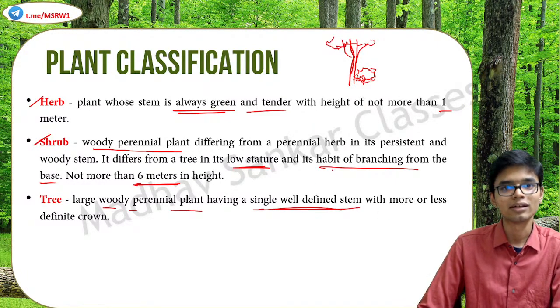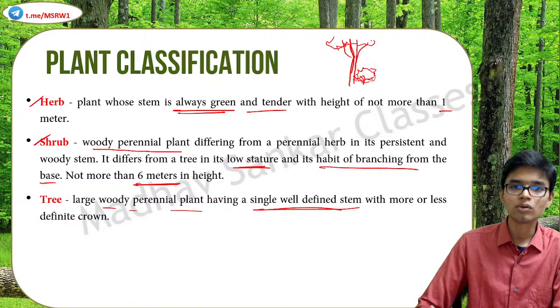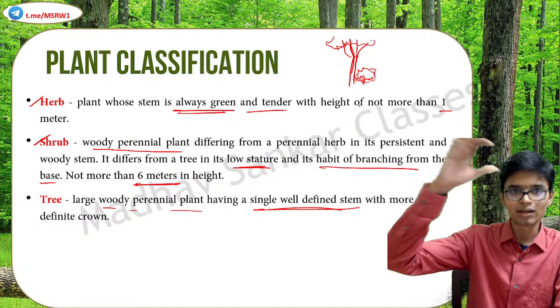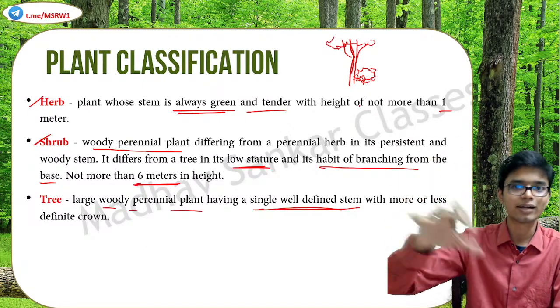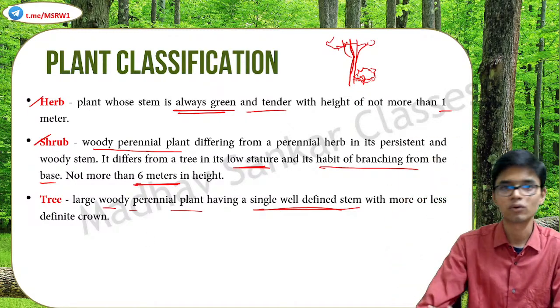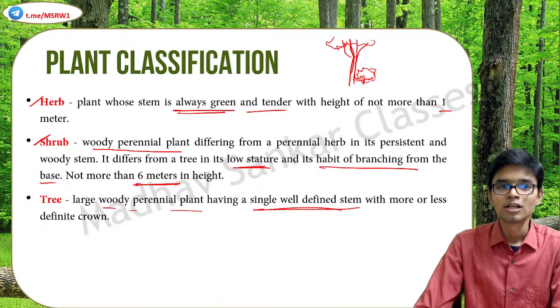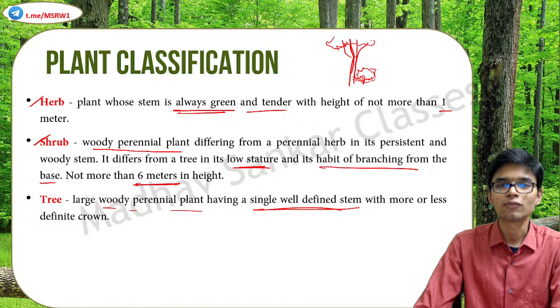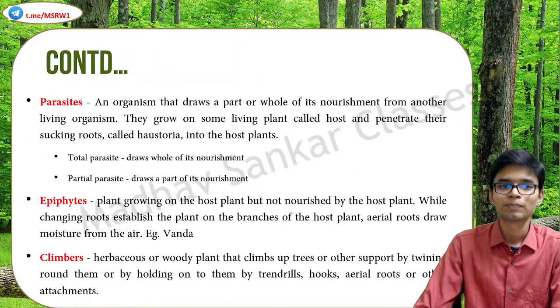Shrubs differ from trees because they have low stature and the habit of branching from the base. In case of a tree, the tree branches only at its top in the crown area, but for a shrub the branching happens at a very low area itself, making it a mini kind of tree. Usually the height limit for shrubs is six meters. Trees are large woody perennial plants having a single well-defined stem with a more or less defined crown - the branches and leaves together form the crown area.